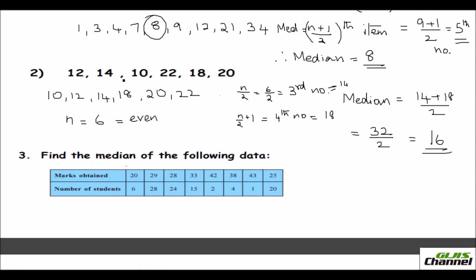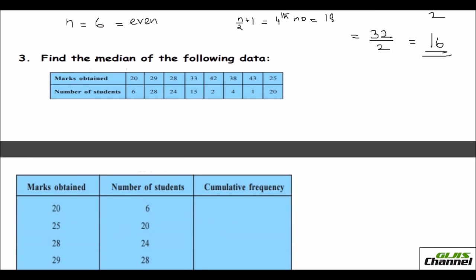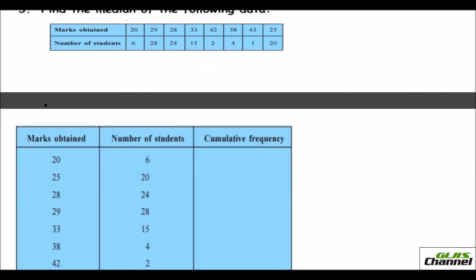So this is how when the list of numbers are given. But another type is that they would give you the marks obtained. Here the marks obtained is given and also the frequency is given. The values and the frequency are given. So I'll show you how to write. First of all, as I told you earlier, the marks obtained has to be written in ascending order.